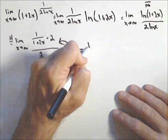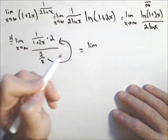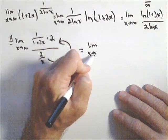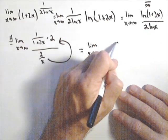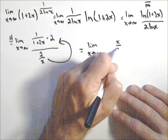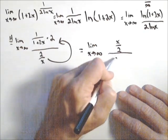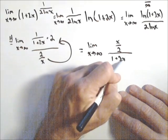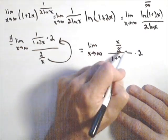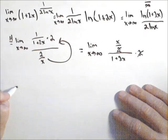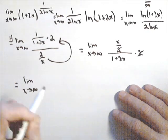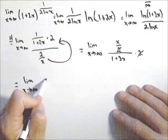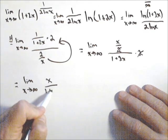So I have the limit as x goes to infinity of x over two over one plus two x times two. Those twos will nicely cancel out for us. So I get the limit as x goes to infinity of x over one plus two x. This is basically an infinity over infinity case again.